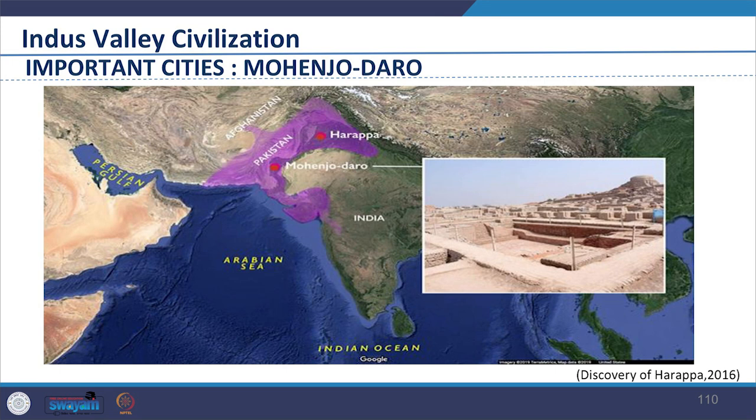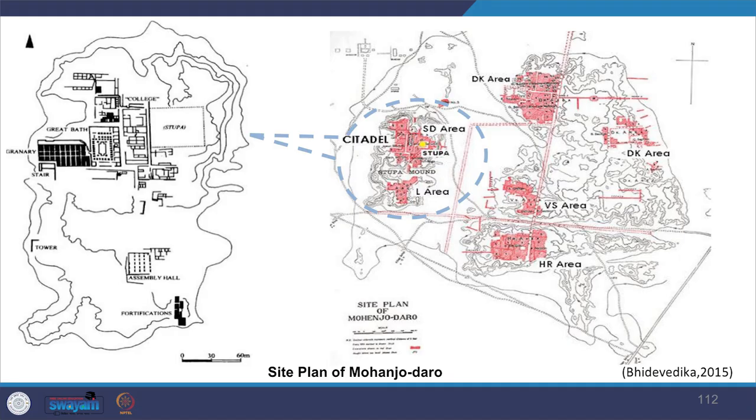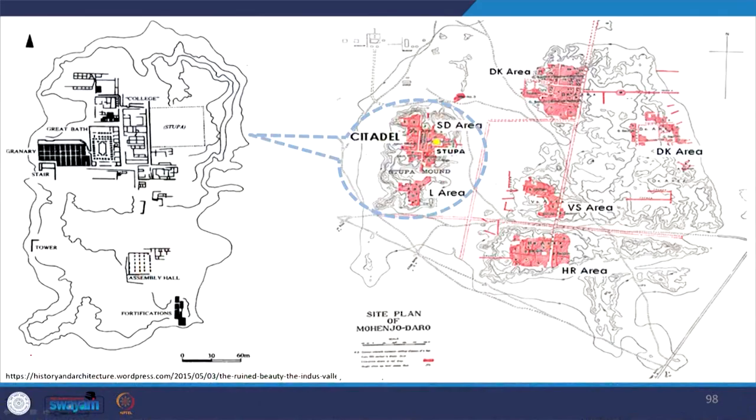Mohenjo-Daro, meaning 'mound of the dead man,' is an archaeological site in the province of Sindh, Pakistan, built around 2500 BCE. It was one of the largest settlements of the ancient Indus Valley Civilization and one of the world's earliest major cities. Looking at the city's details: there was no fortification; major streets were in the north-south direction with intersections at right angles; streets within built-up areas were narrow. There was distinct zoning for different groups — religious, institutional, and cultural areas around monasteries and the Great Bath in the western part. The north was dedicated to agricultural industry, and the south had administration, trade, and commerce.